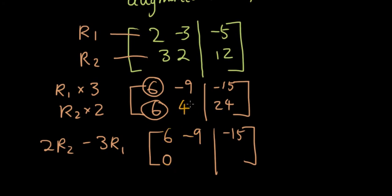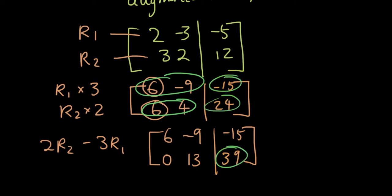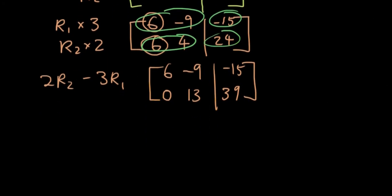And then 4 minus negative 9 is 4 plus 9, which is 13. So basically what I did was I got this row and I take this row and I write the result in row 2 again. So 6 minus 6 is 0, 4 minus negative 9 is 13, 24 minus negative 15 is 39. So once I have done that, you can see that in my first matrix, this is the leading diagonal. And below the leading diagonal, I have only zeros. And once that's done, you've pretty much already done everything that's necessary to solve this equation.